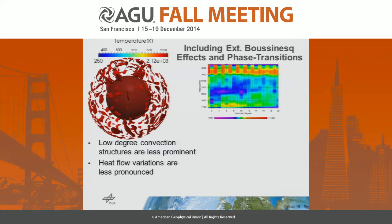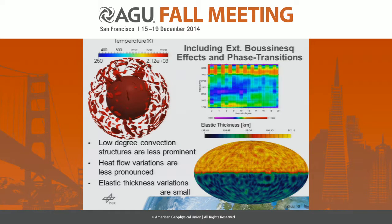With heat flow variations less pronounced in this case, the spherical harmonics analysis shows a less dominant low-degree convection pattern. Looking at the elastic thickness, we again observe the dichotomy but with less variation within the two hemispheres. The highest elastic thickness value is around 220 kilometers, which is again lower than the 300-kilometer estimate at the North Pole.